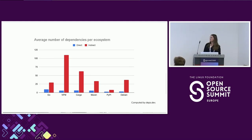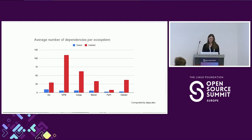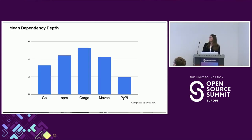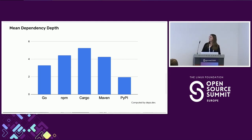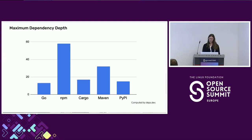We can look into this with some of the analysis we've done on Deps.dev. This is a graph of the average number of dependencies of a package per ecosystem. You can see that while the number of direct dependencies is fairly tractable, this blows up significantly when you look at indirect dependencies. This varies a lot across different ecosystems but in general the number of direct dependencies is actually quite small. When you look at dependency depth however it becomes even more concerning — the average number of dependencies per ecosystem is fairly tractable.